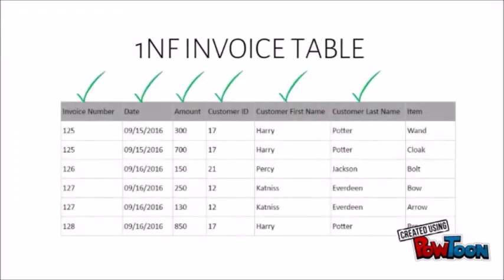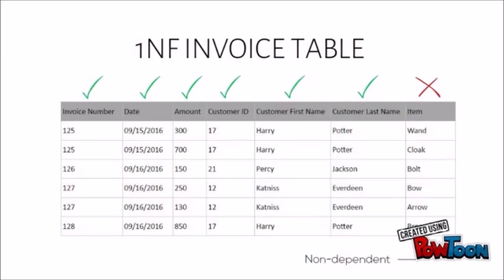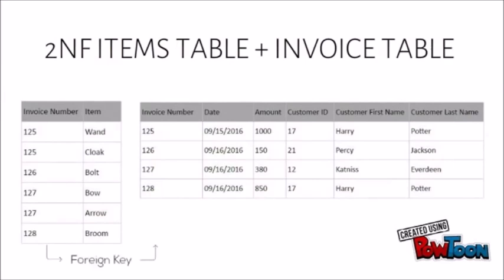Our invoice table is already in the first normal form, but the item column is not dependent on our primary key, the invoice number. It should be split into another table. We can simply link the invoice table and the items table using a foreign key in order to associate an item with an invoice.